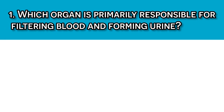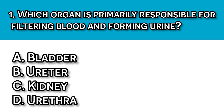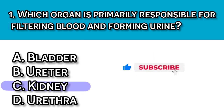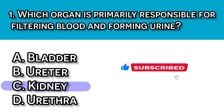Question number one: Which organ is primarily responsible for filtering blood and forming urine? A. Bladder, B. Ureter, C. Kidney, and D. Urethra. The answer here should be C, the kidney, because the kidneys filter waste products from the blood and regulate fluid and electrolyte balance.